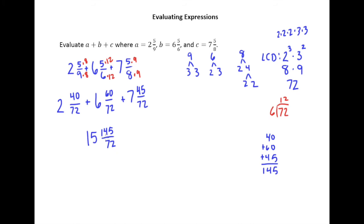So remember that if this fraction part in our answer ends up being improper, we need to convert it into a mixed number, and then add its whole part to 15. And so we've got 145 divided by 72. And let's see, 72 is actually going to barely fit into 145 twice.